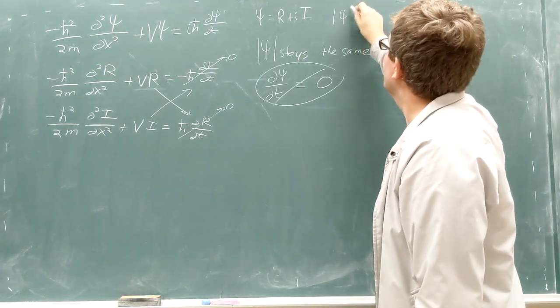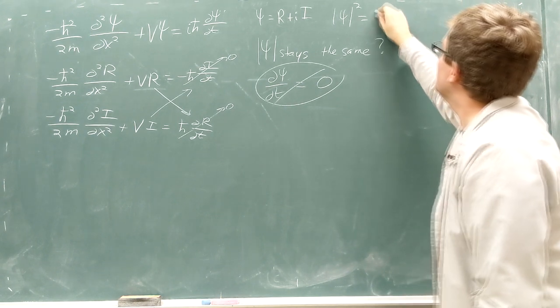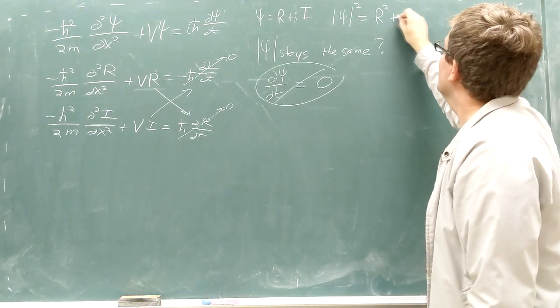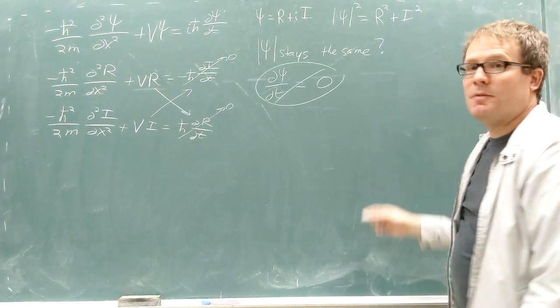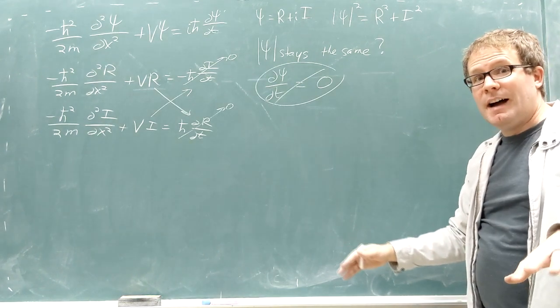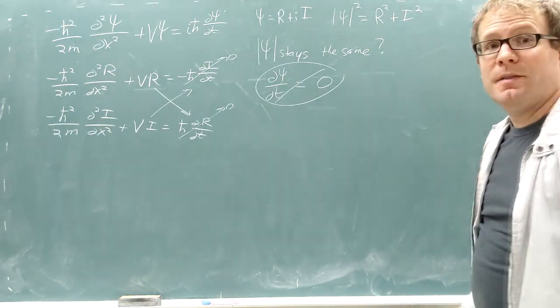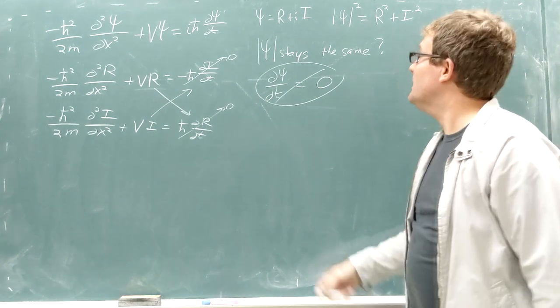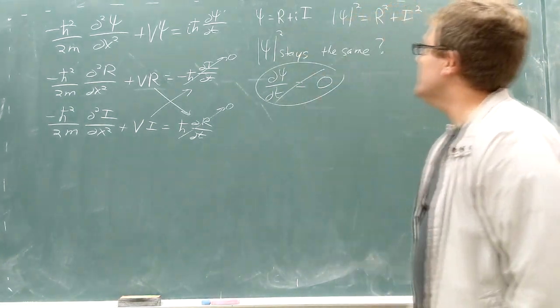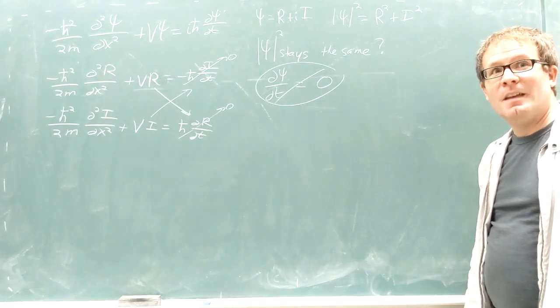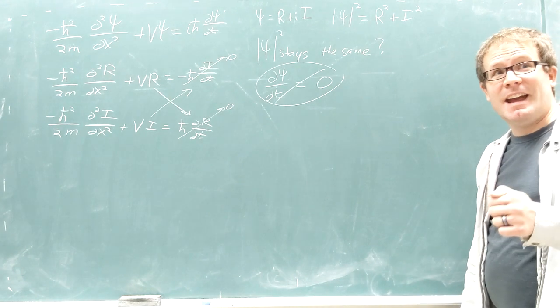So the way you get the modulus of something, if you take the modulus squared, it's just the real part squared plus the imaginary part squared. So we're getting rid of all of the i's just by taking real part squared plus imaginary part squared. It works exactly like the Pythagorean theorem does. So is it possible to get this thing to stay the same? The answer to that is actually yes, we can.